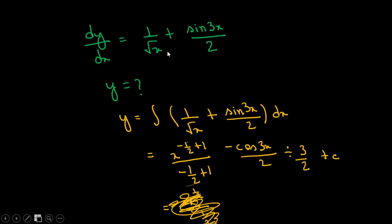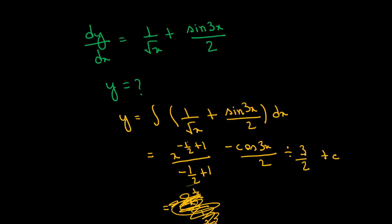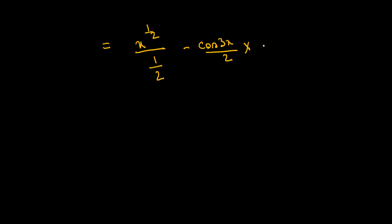And minus cos 3x by 2 divided by 3 by 2, so I'm writing minus cos 3x by 2 into 2 by 3.